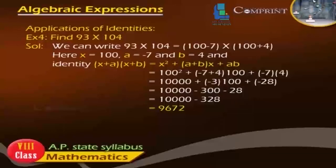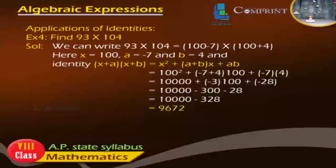Example 4: Find 93 × 104. Solution: We write 93 × 104 as (100 minus 7)(100 plus 4). Here x equals 100, A equals minus 7, and B equals 4. Using the identity (x plus A)(x plus B) equals x² plus (A plus B)x plus AB, we get 100² plus (minus 7 plus 4) × 100 plus (minus 7 × 4), equals 10,000 plus minus 3 × 100 plus minus 28, equals 10,000 minus 300 minus 28, which equals 9,672.